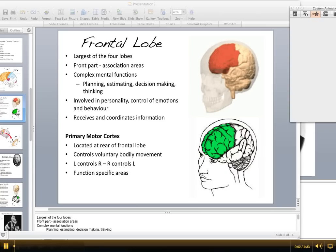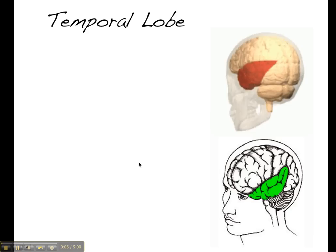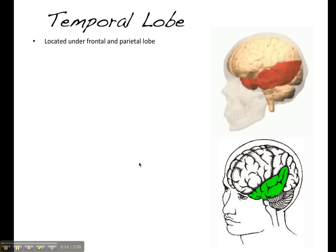The last lobe I'm going to talk about is the temporal lobe. This is located under the frontal and parietal lobe.